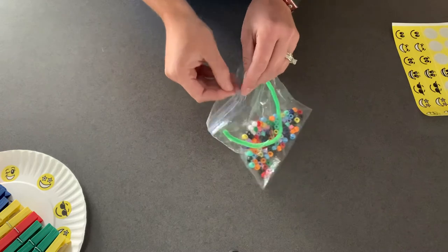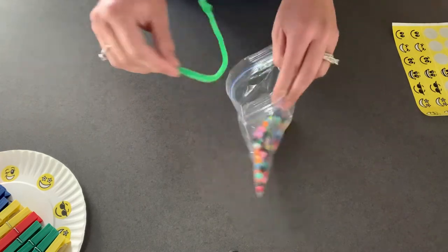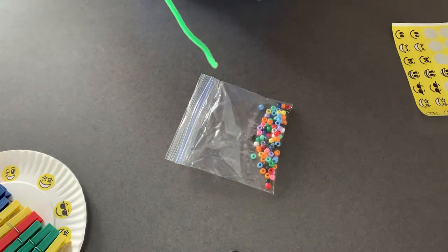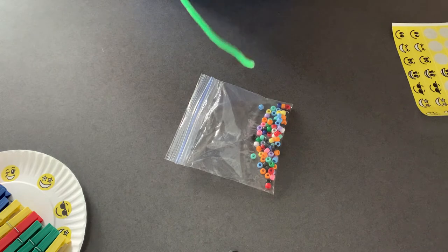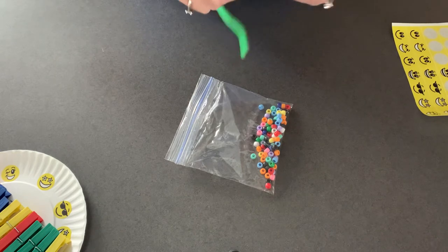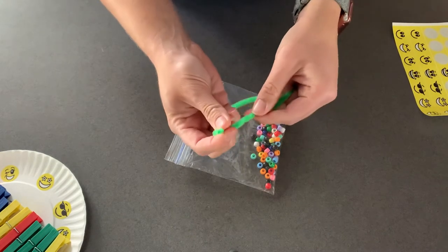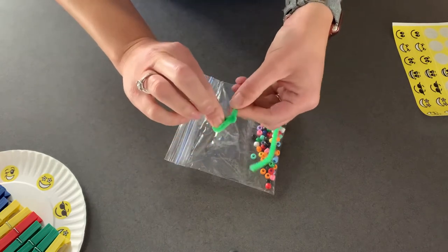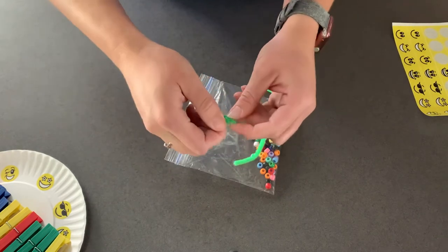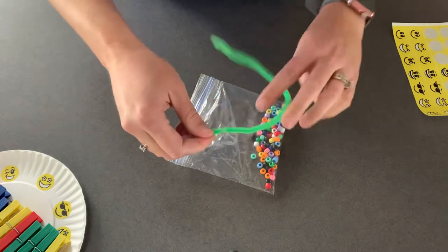The next one is there should be a bag of beads and a pipe cleaner. So the pipe cleaner, mine's already tied off. Let me show you what I do. The pipe cleaner, I just wrap around and make a little loop and then I twist it so that the beads cannot go anywhere.